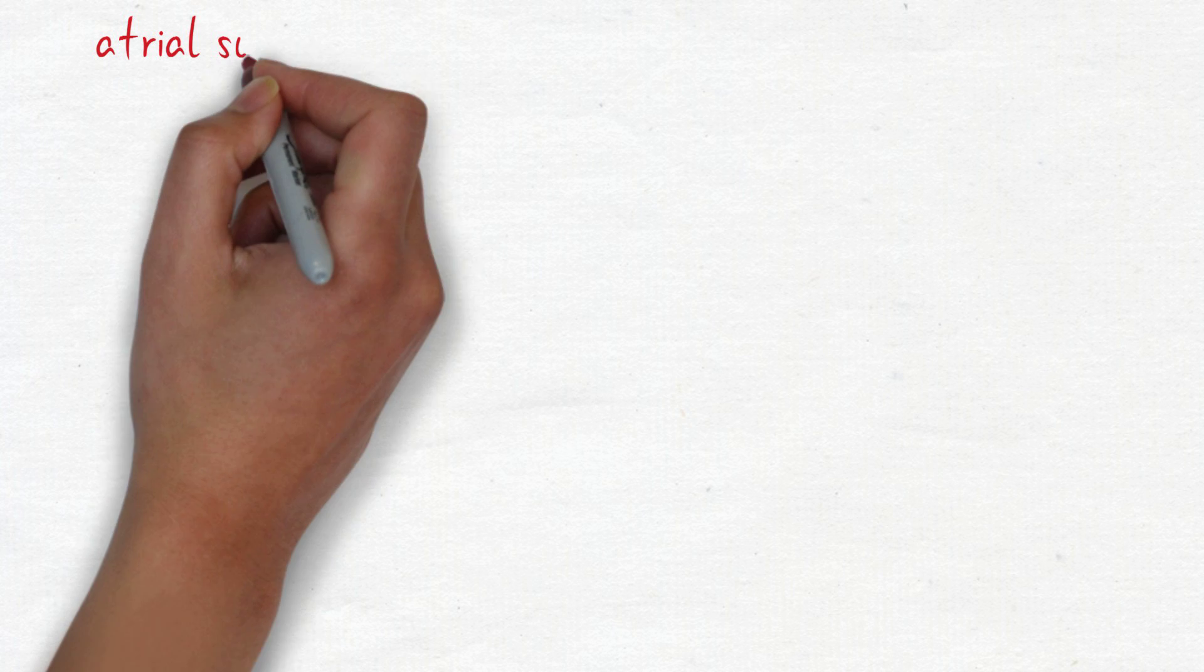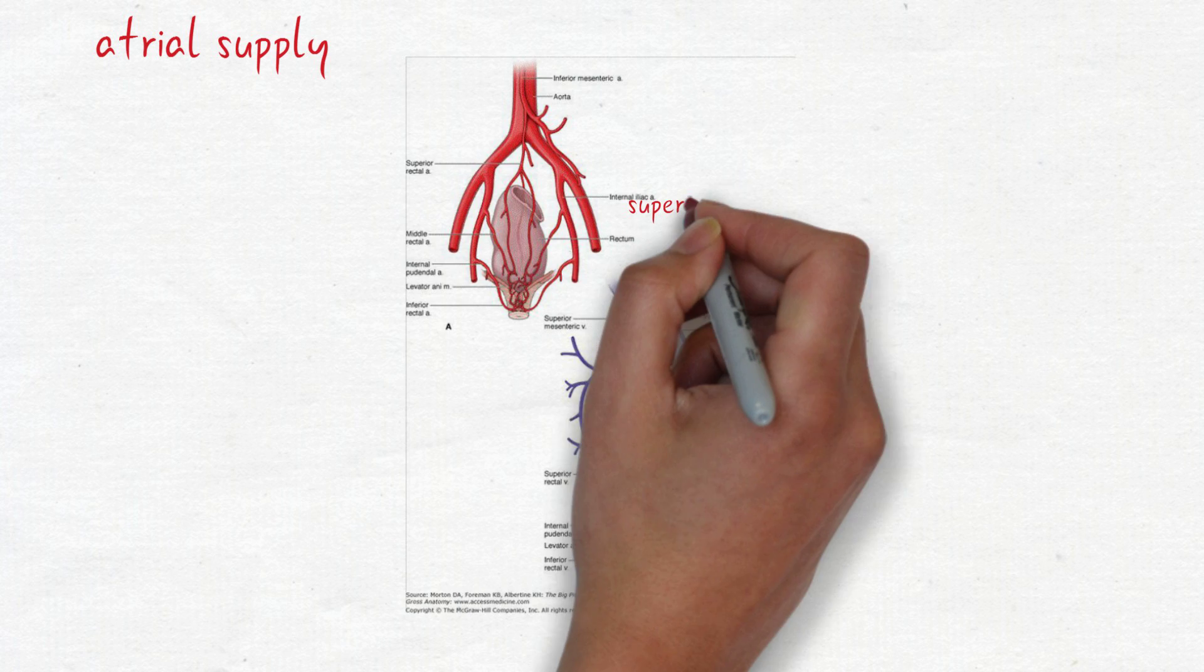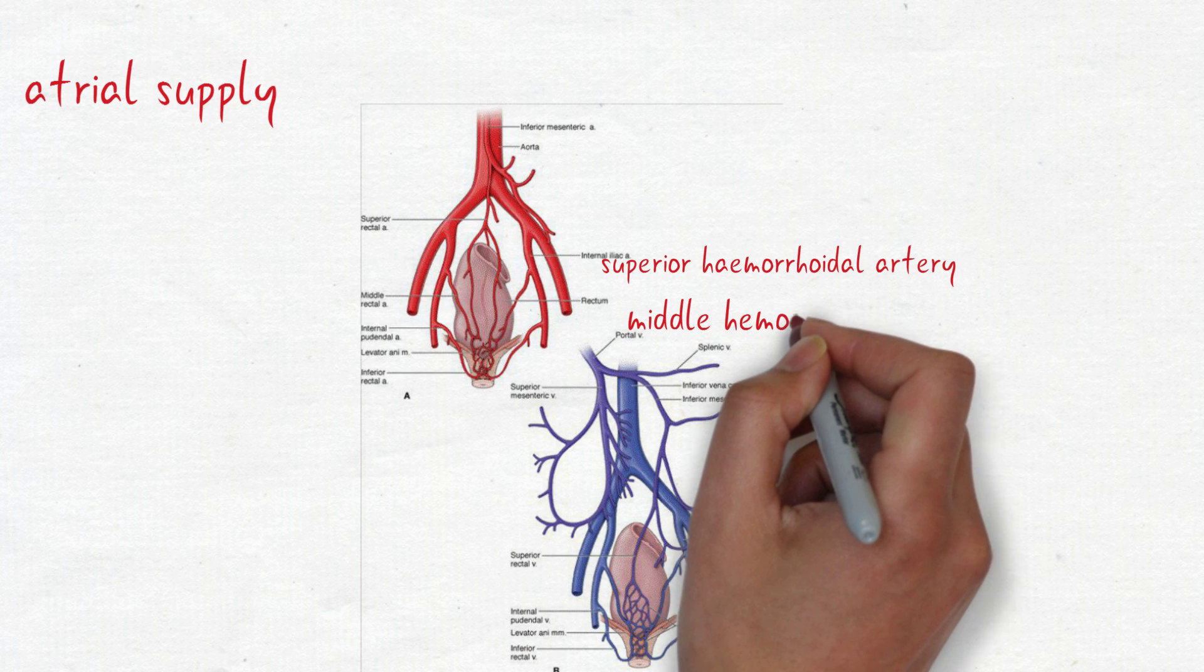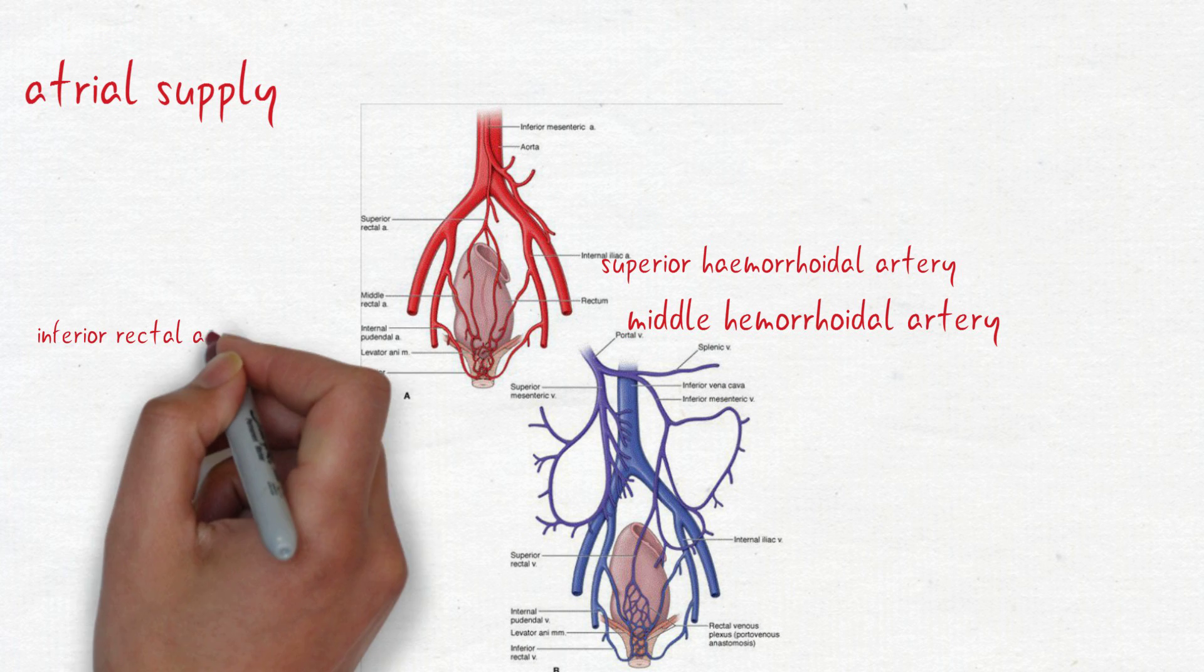Let's see the arterial supply to the rectum. It has three arteries: superior hemorrhoidal artery, middle hemorrhoidal artery and inferior rectal artery.